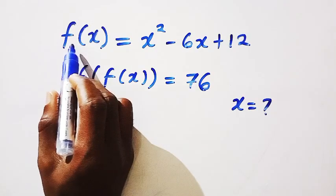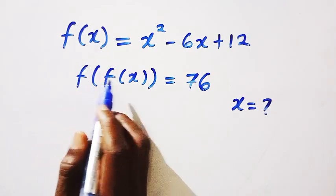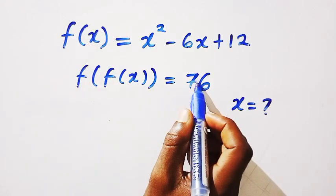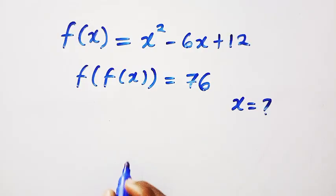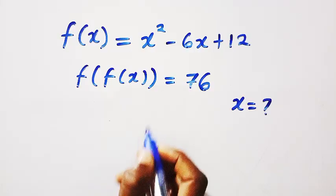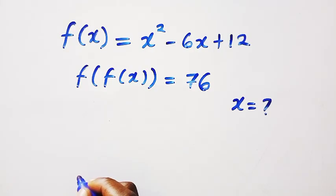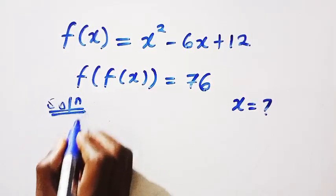So we are given a function f and also a composite function f of f of x. So f of f of x equals 76. Then we are interested to find x. So I will be solving this problem step by step. And before solving it, if anyone knows how to solve this, you can drop it in the comment box.